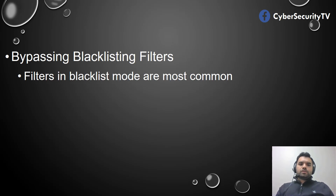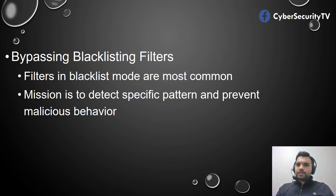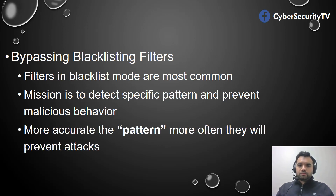Filters in blacklist mode are most common. The web application firewall acts like an antivirus — it has a bunch of rules or patterns, and if it finds a matching pattern it blocks the input or payload provided by the user or attacker, which is most common. The mission is to detect a specific pattern and prevent malicious behavior — same as an antivirus. As soon as it finds something matching, it will prevent the attack.